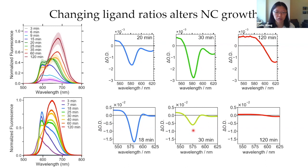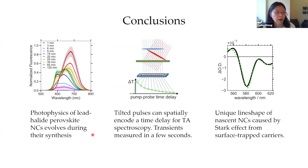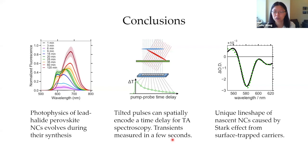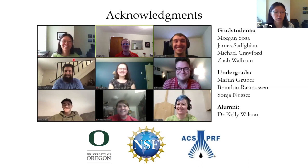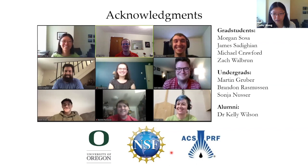In conclusion, we've seen that the photophysics of lead halide perovskites evolves during their synthesis. We can use tilted pulses to spatially encode a time delay for transient absorption spectroscopy, allowing us to do that measurement in just a few seconds — useful because young nanocrystals are pretty unstable. When we can measure them, we find unique line shapes caused by surface-trapped carriers, allowing us to report on the surface of nanocrystals during their synthesis, which is actually a pretty hard thing to do with any other technique. I should acknowledge James Sedegan and Dr. Kelly Wilson, who designed our instrument and did all the work.